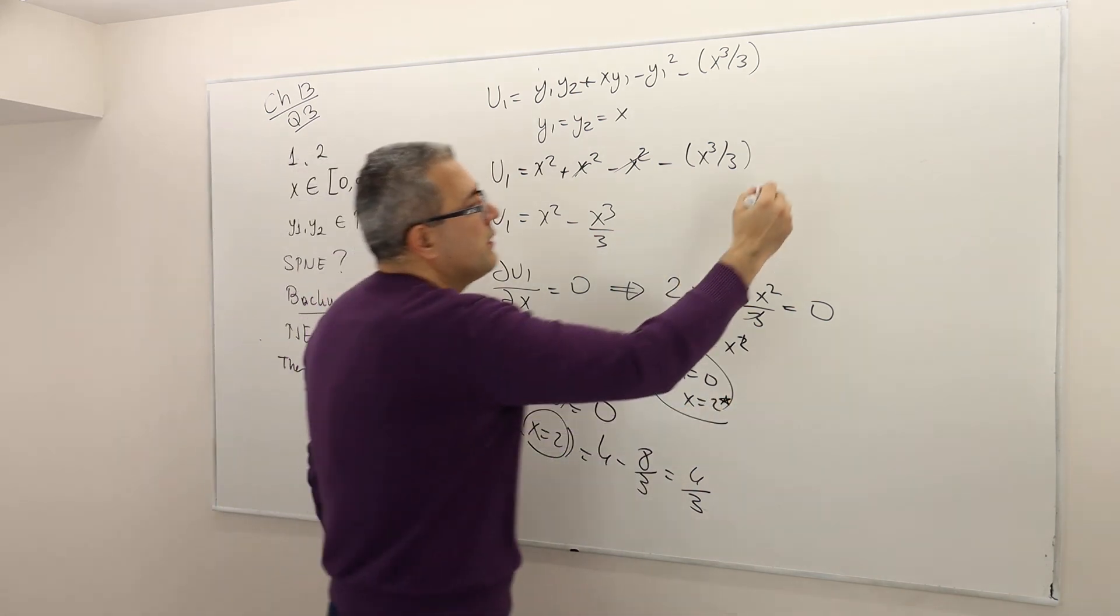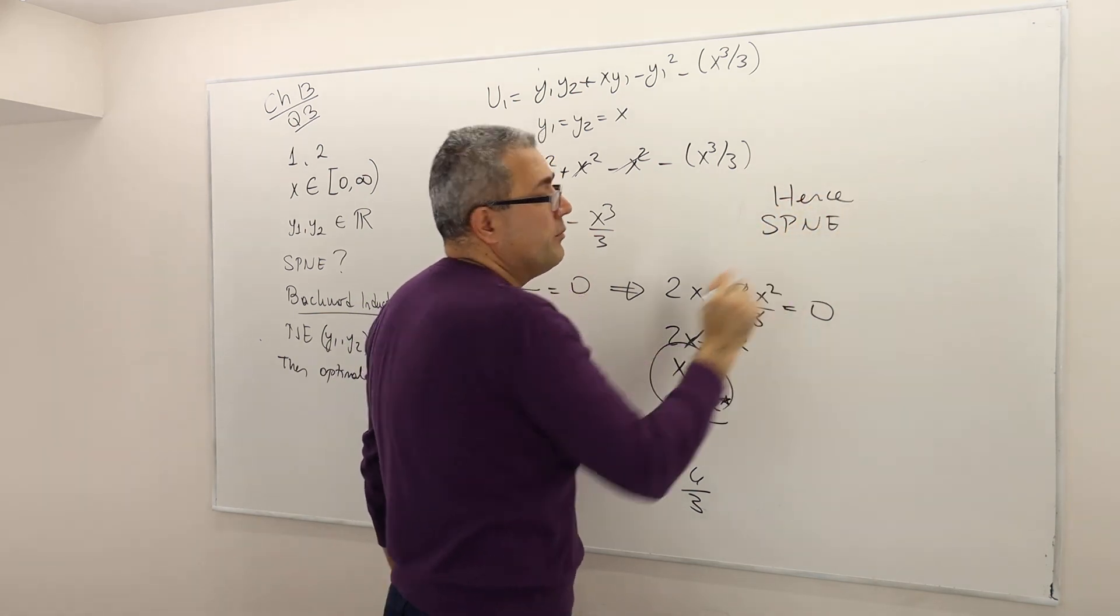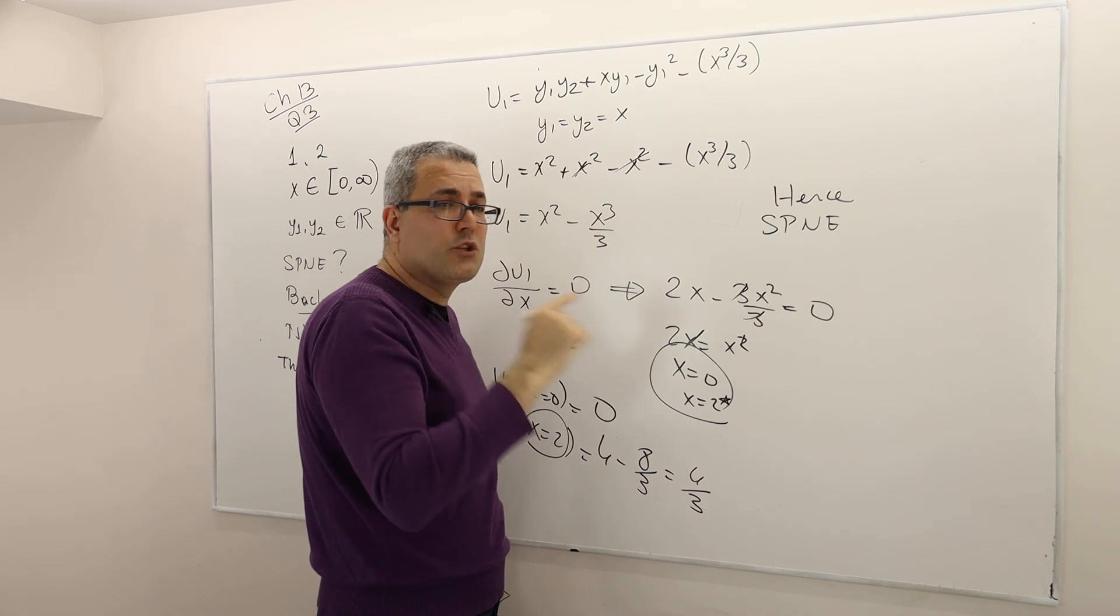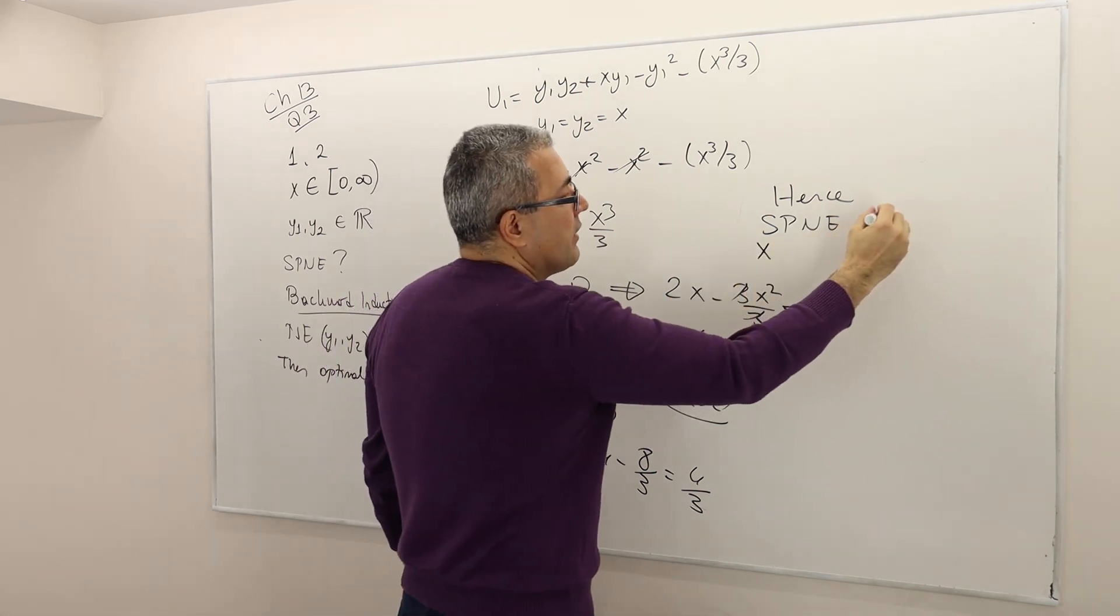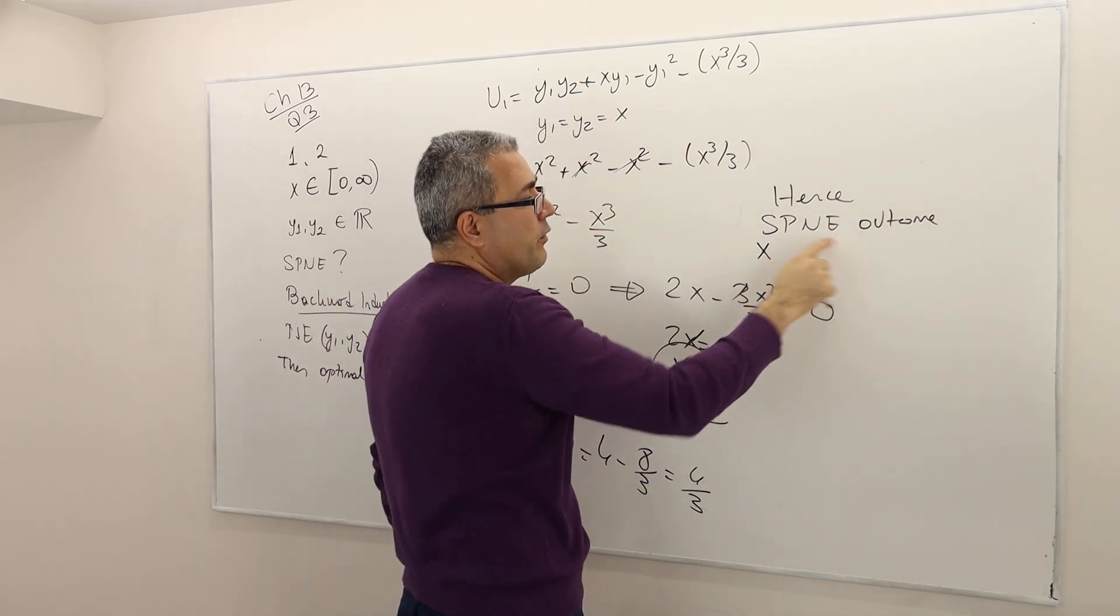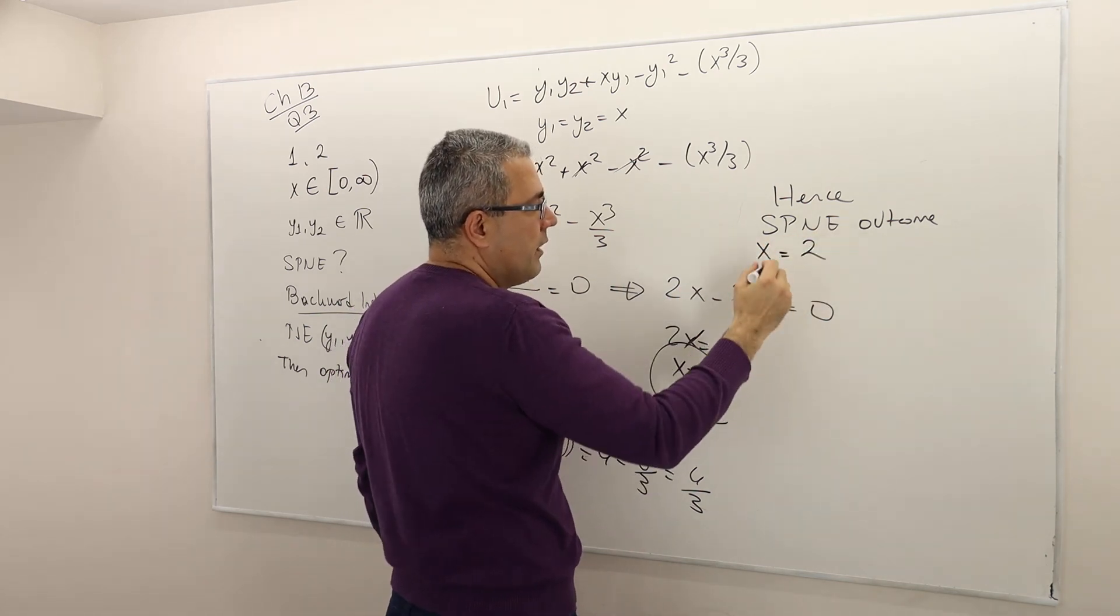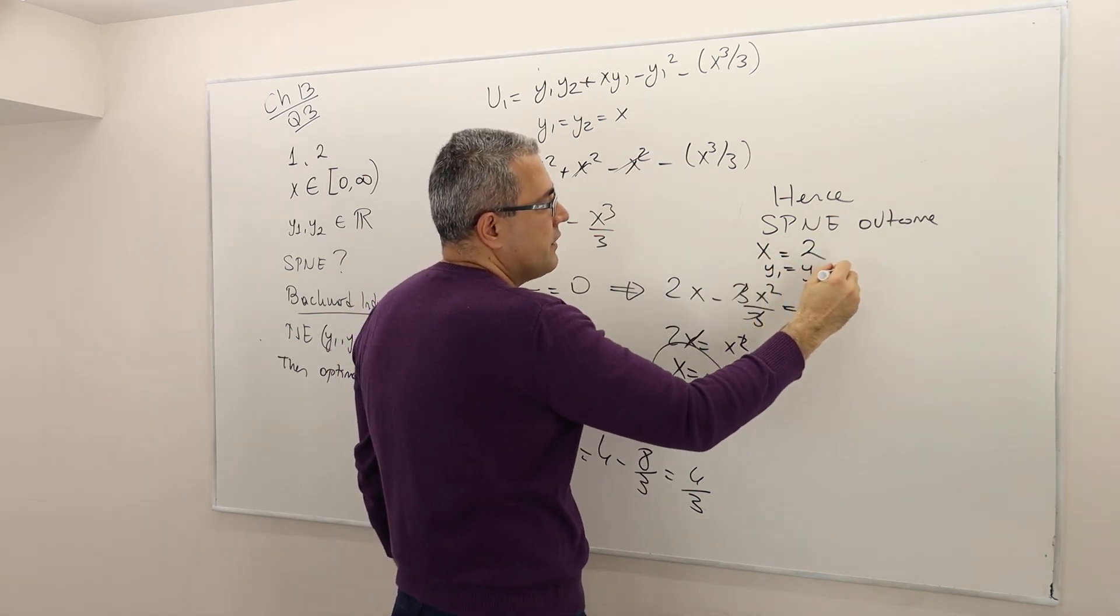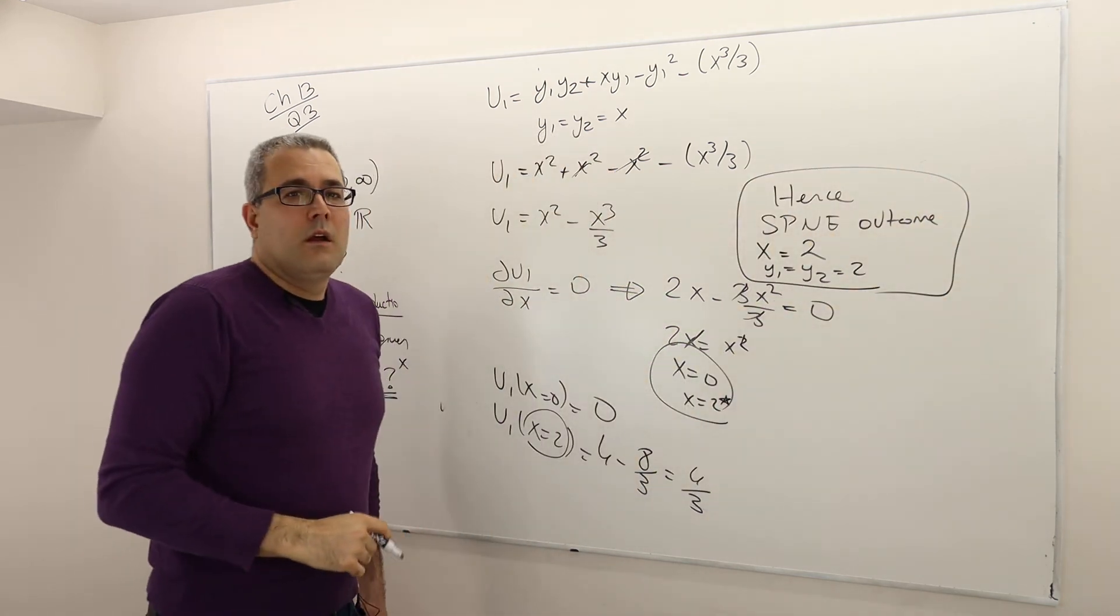Hence, let me conclude here. The subgame-perfect Nash equilibrium, not Nash equilibrium, but something stronger than this, is the following. I'm not writing the strategy because we don't really have time. The subgame-perfect Nash equilibrium outcome is going to be x = 2, y1 = y2 = 2.